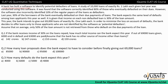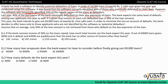A bank built software to identify potential loan defaulters. A study of 10,000 loans of exactly rupees 1 lakh each was conducted. The software correctly identified 80% of those who eventually defaulted, but also incorrectly identified 10% of regular payers as defaulters. Last year, 30% of borrowers defaulted on their due payments, and the bank expects the same level of defaults this year.